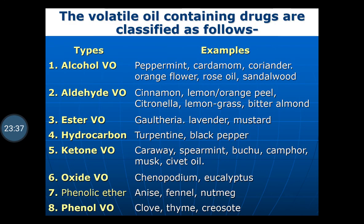The volatile oil-containing drugs can be classified as: alcohol volatile oils — peppermint, cardamom, coriander, orange flower, rose oil, sandalwood oil; aldehyde volatile oils — cinnamon, lemon, orange peel, citronella, lemongrass, bitter almond; ester volatile oils — gaultheria, lavender, mustard; hydrocarbon volatile oils — turpentine, black pepper; ketone volatile oils — caraway, spearmint, buchu, camphor, musk; oxide volatile oils — chenopodium, eucalyptus; phenolic ether volatile oils — anise, fennel, nutmeg; and phenol volatile oils — clove, thyme, and chrysanthemum.